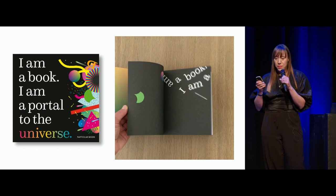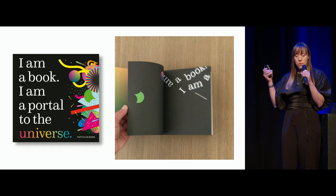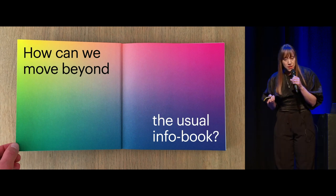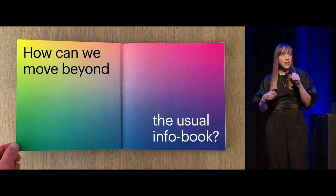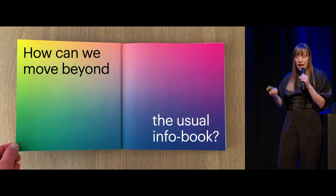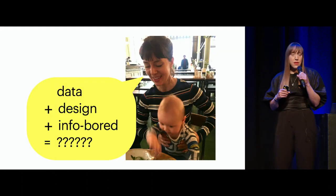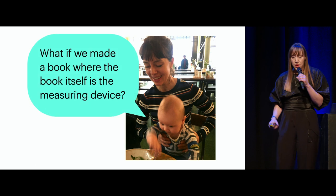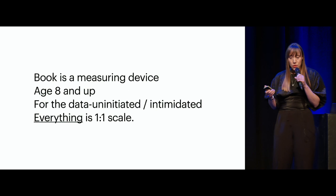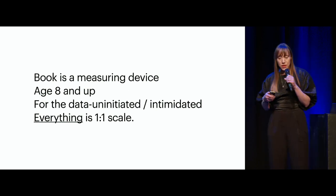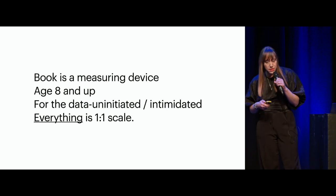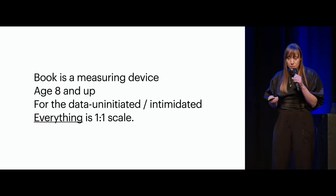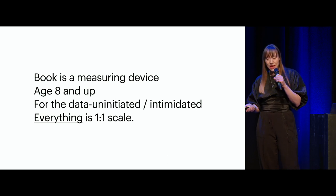I've been pushing informative books in new directions with my friend Miriam Quick. In our latest book — I Am a Book, I Am a Portal to the Universe, published by Penguin — this book was a response to the traditional infographic book, which was an innovative format a decade ago. It transformed the design landscape, but it hasn't changed much since. So we asked ourselves: how could we make something different than the standard info book? We began brainstorming while dancing my baby to sleep in a cafe and came up with our super book idea: what if we made a book where the book itself is the measuring device? The book can be used to measure things for almost everyone from children age 8 and up to adults, and our goal was to write for the data uninitiated or data intimidated — people who wouldn't normally pick up a book with data or science in the title. And our golden rule: all the data would be represented on a one-to-one scale printed on the page at actual size.